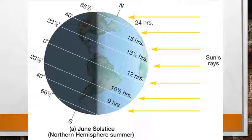Light lasts for 6 months at the north pole. It is summer in the northern hemisphere and winter in the southern hemisphere. As we move from the equator towards the south pole, the duration of the day decreases. The altitude of the midday sun, which is 90 degrees at the Tropic of Cancer, goes on decreasing as we move towards the south polar regions.